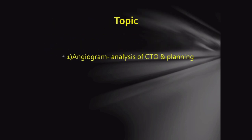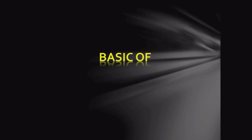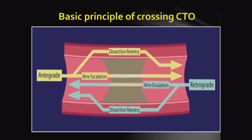My topic covers two areas: number one, angiogram analysis of SITU and planning; number two, guidewire basics and choice of guidewire. Before zooming deep into today's topic, we have to understand this fundamental slide. If we can understand this slide, SITU will be easy for us. This is the basic principle of crossing CTO — you have to connect the proximal and distal lumen either antegradely or retrogradely, either by true-to-true lumen wire escalation, or through subintima and back into true lumen by dissection and re-entry method.